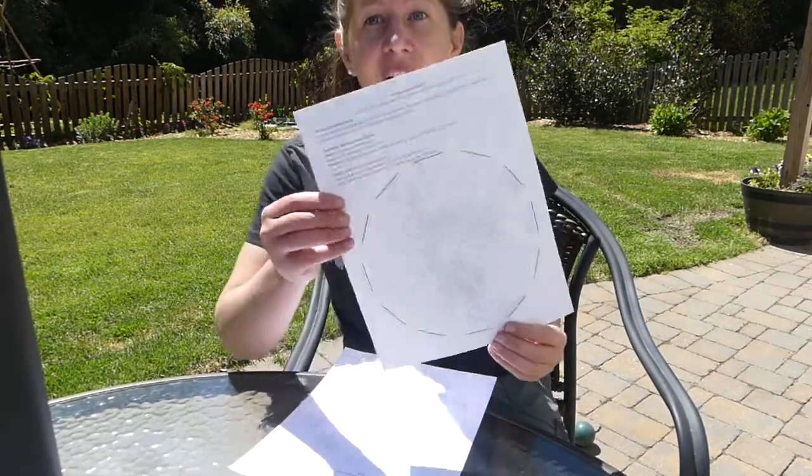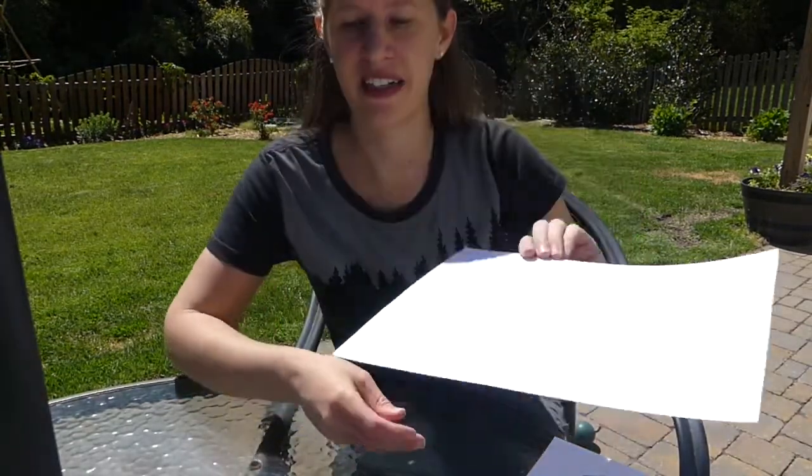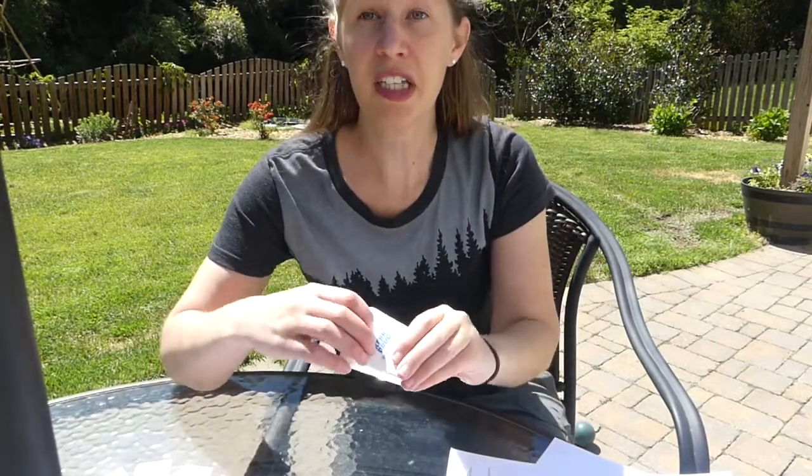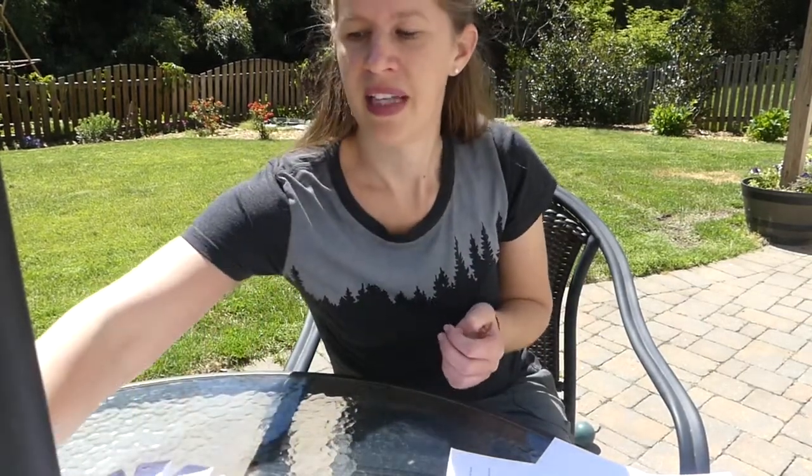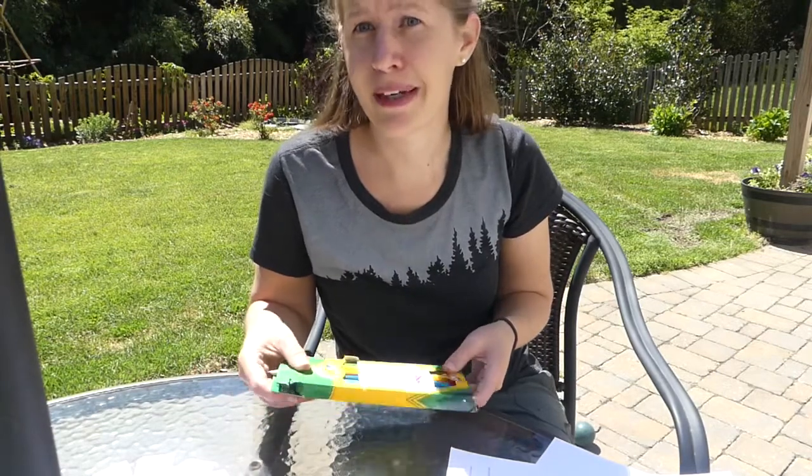To get started we're going to need a northern hemisphere, a southern hemisphere, a pencil, some scissors, something to poke a hole with maybe a nail or a paperclip, some string which dental floss works perfect, some glue, and finally some colored pencils or markers or anything that you can use to just make it a little bit more exciting.